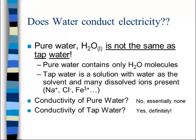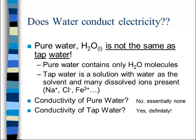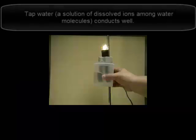Let's take a look at some specific substances, starting with water. Does water conduct electricity? Pure water is not the same as tap water. Pure water contains only H₂O molecules. Tap water is actually a solution with water as the solvent and many dissolved ions present — sodium ions, chloride ions, iron ions. Let's take a look at the conductivity of pure water versus tap water.